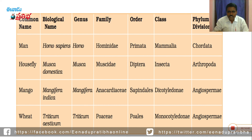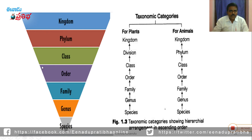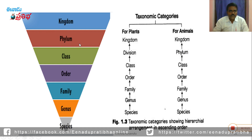These are different examples of plants and animals with different types of taxonomic categories. All these categories in classification are kept in a hierarchy level. For plants: kingdom, division, class, order, family, genus, and species. For animals: kingdom, phylum, class, order, family, genus, and species. Both are the same, except that in plants the second unit is division, whereas in animals it is phylum. Division in plants is replaced by phylum in animals.